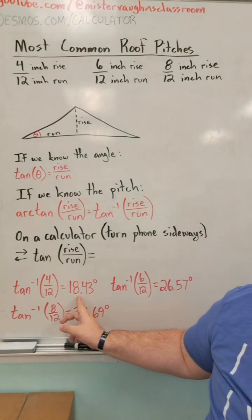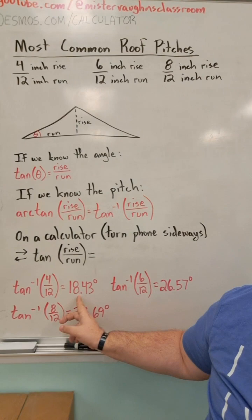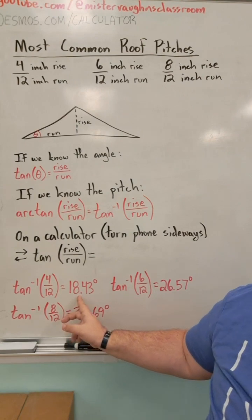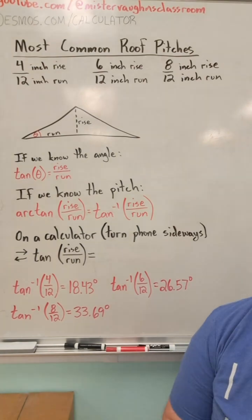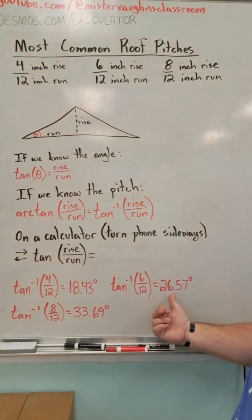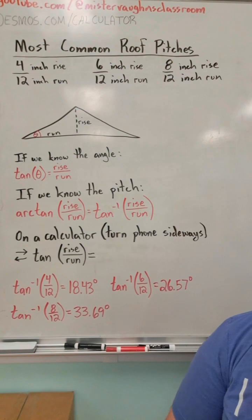If I want the arc tangent of a roof with a 6 over 12 pitch, I get 26.57 degrees.